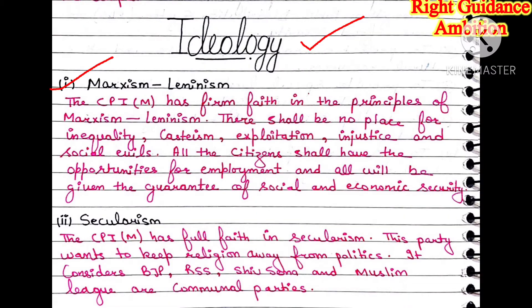The next heading is ideology — the principles on which the CPIM party works. First, Marxism and Leninism. Marx and Lenin were leaders whose ideas started communism, and CPIM has full belief in those principles. They say that in society, inequality, casteism, exploitation, injustice and social divisions have no place — the government should try to eliminate all these things. All citizens shall have equal opportunity for employment, and every person should have a guarantee of social and economic justice and security.